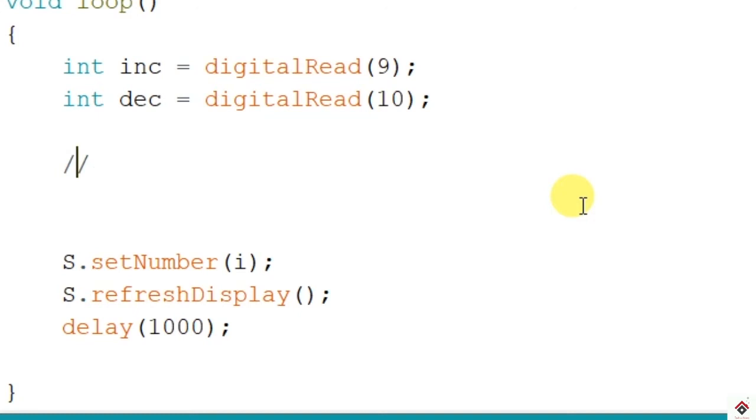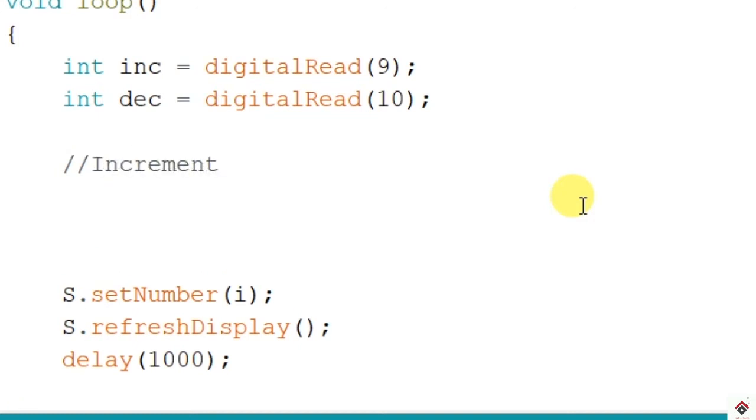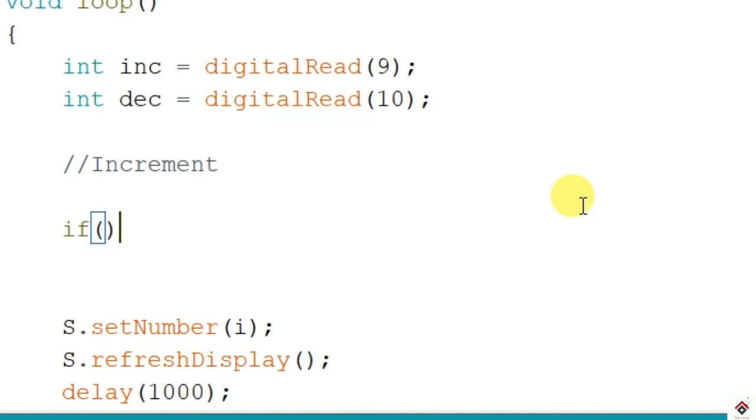First we will write the logic for increment. We have to use a simple if statement and check a few conditions. So first condition will be whether we have pressed the push button, that means the value received is high. Using AND, the next condition is we have to check whether the incremented value is less than 9. Here we are using just one 7-segment which can display from 0 to 9. So if we increment the count to 10, it will not be able to be seen on the display. That's why you have to add this condition.